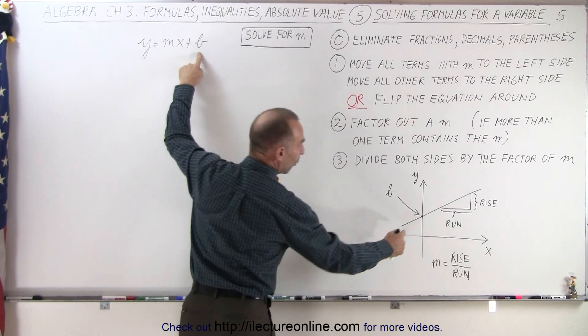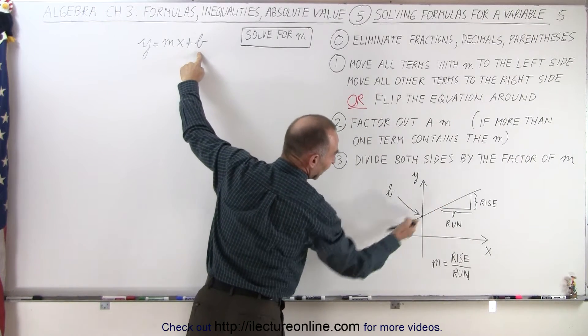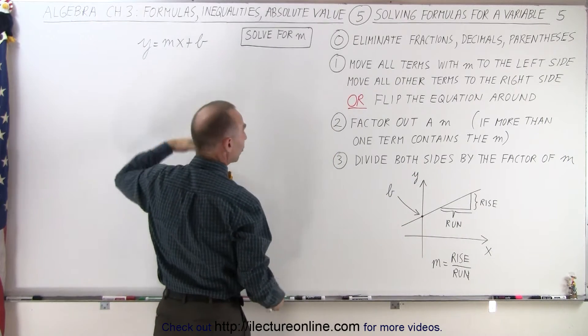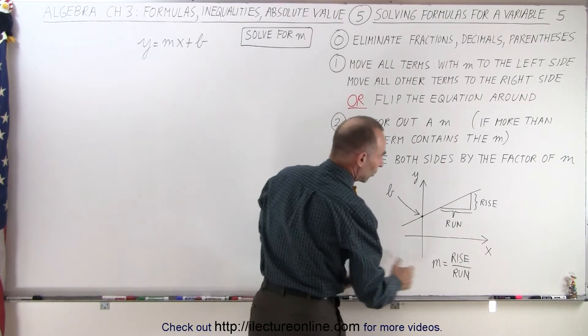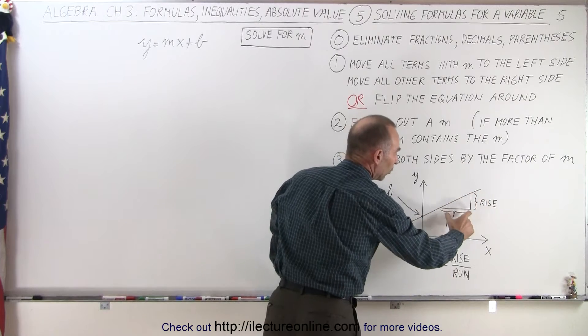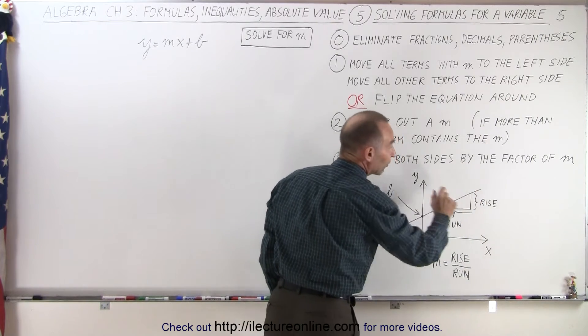b here is what we call the y-intercept, it's where the straight line crosses the y-axis, and m is the slope of the line, it's the relationship between the rise and the run, or the ratio of the rise divided by the run.